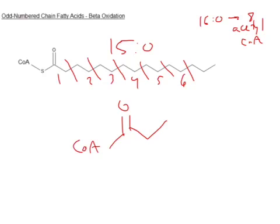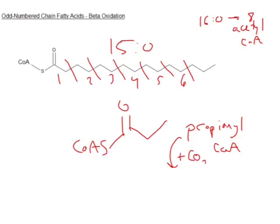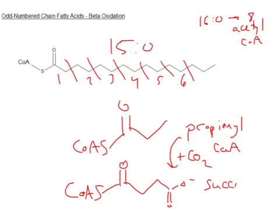That three-carbon thing is called propionyl-CoA. What's going to happen here is we've made our six acetyl-CoAs, and we have our propionyl-CoA now. We need to make that into an acetyl-CoA-like thing, or something we can feed straight into the Krebs cycle. Our option is to add a CO2 to make a succinyl-CoA, which is an intermediate in the Krebs cycle. So we can feed that right into Krebs, which is good.